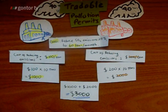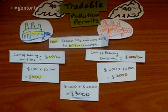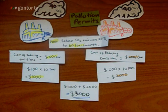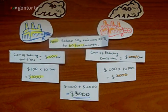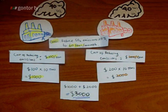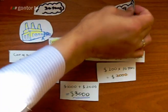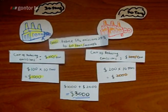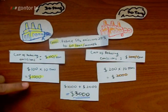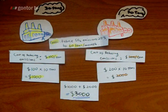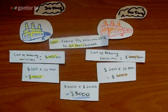We are now in the second part of the videos about tradable pollution permits. In the first part, we saw that both companies successfully reduced their pollution from 40 tons of sulfur dioxide per month to 30 tons. The cost for company A was $1,000 and for company B it was $2,000.